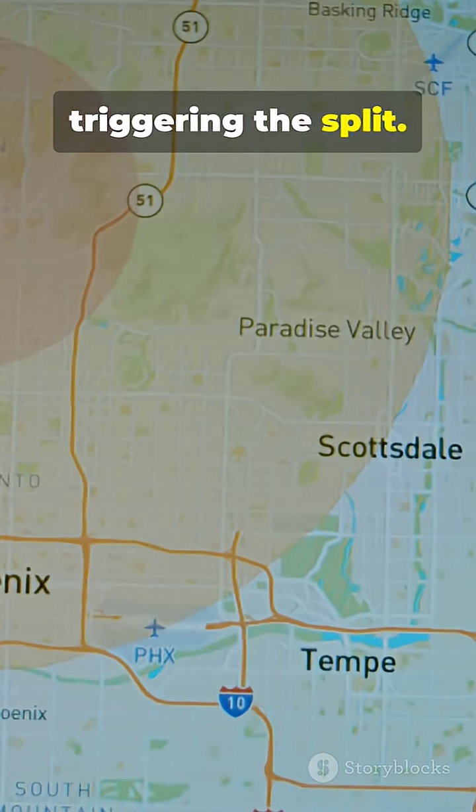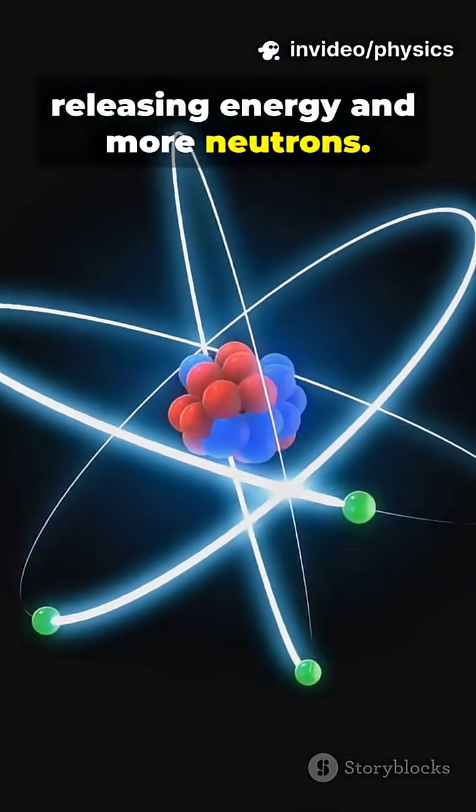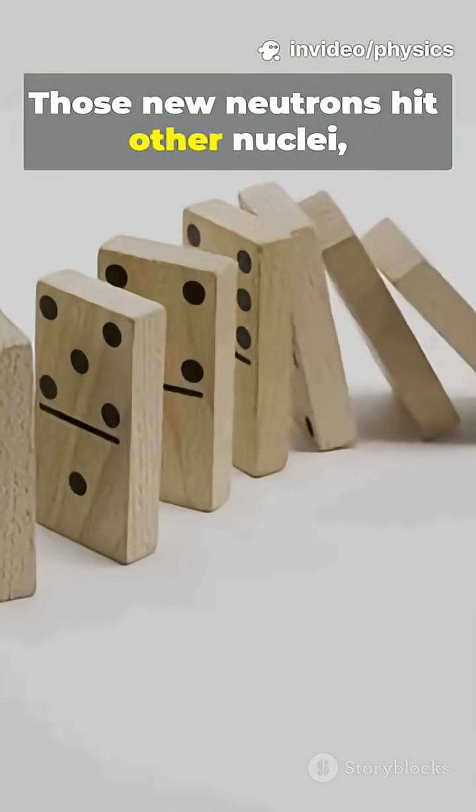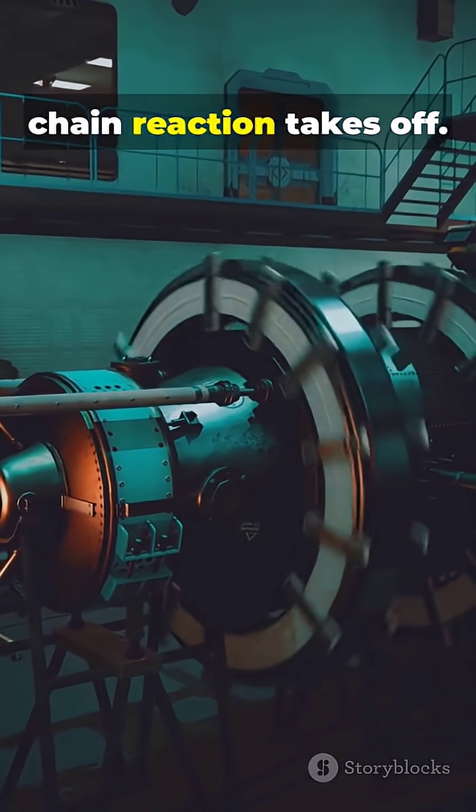A neutron hits the nucleus, triggering the split. The nucleus splits, releasing energy and more neutrons. Those new neutrons hit other nuclei, causing more splits. Boom! A self-sustaining chain reaction takes off.